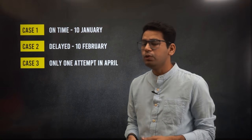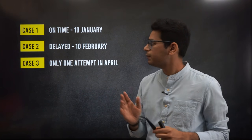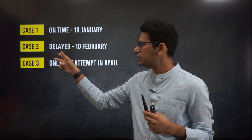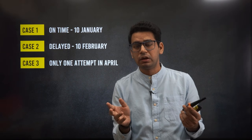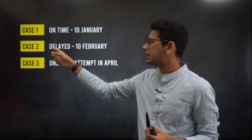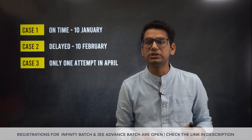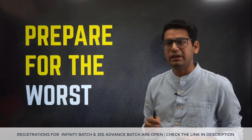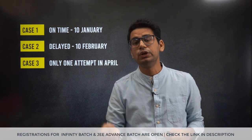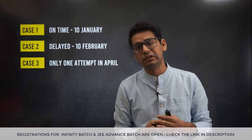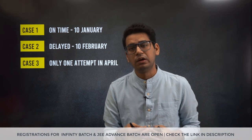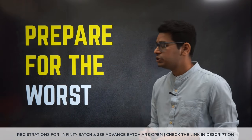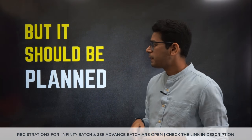Coming back to your problem — how do we strategize for 2021? There are three possible cases: the paper could happen on time around January 10th; it could be delayed by a month; or there could be only one attempt in April, which is not ideal since two attempts are better. We should be prepared for the worst case, which is the exam happening on schedule, leaving us with barely 4 months and coaching disrupted due to COVID.